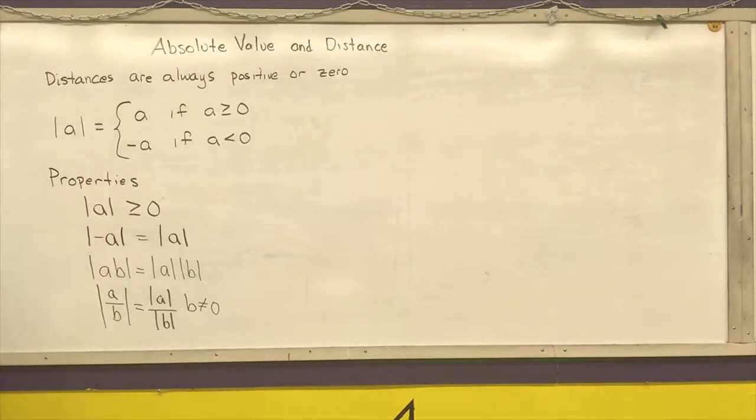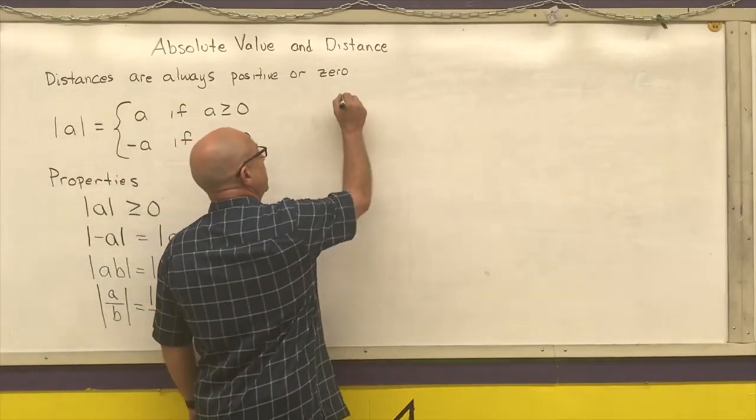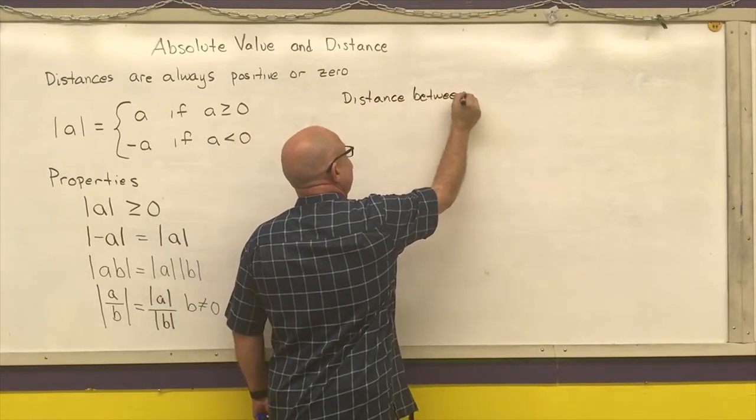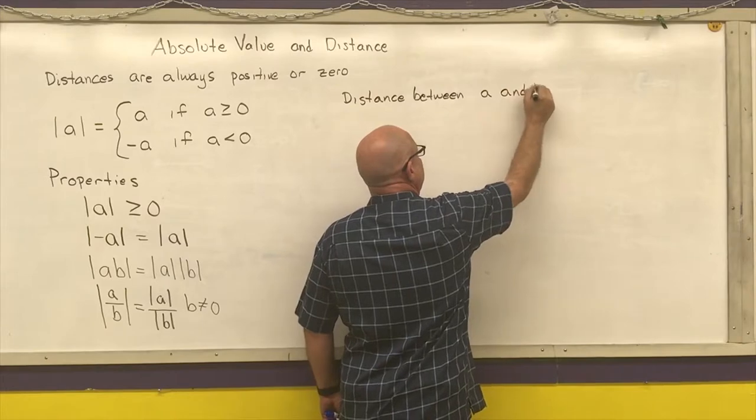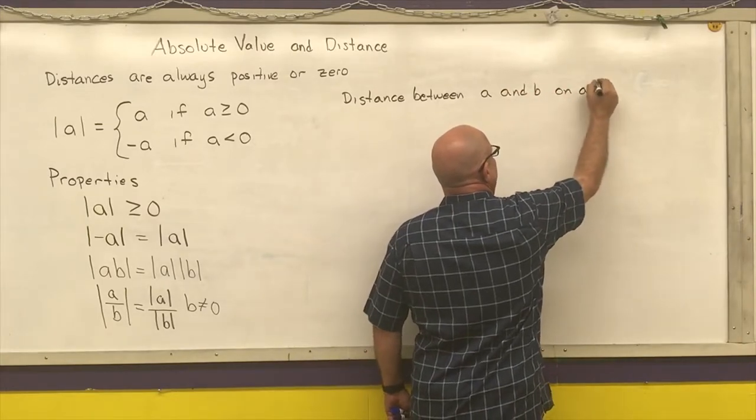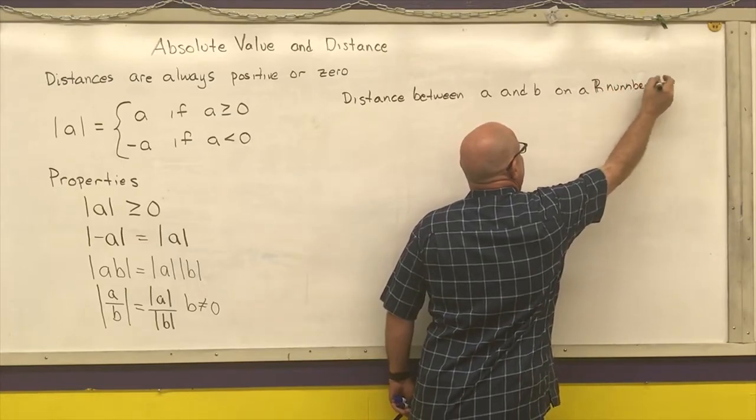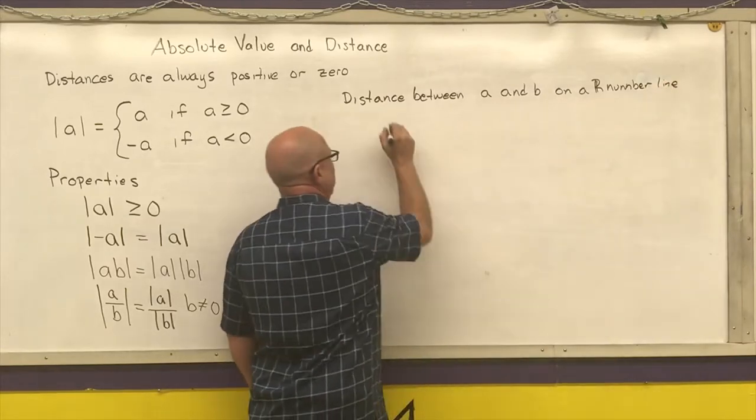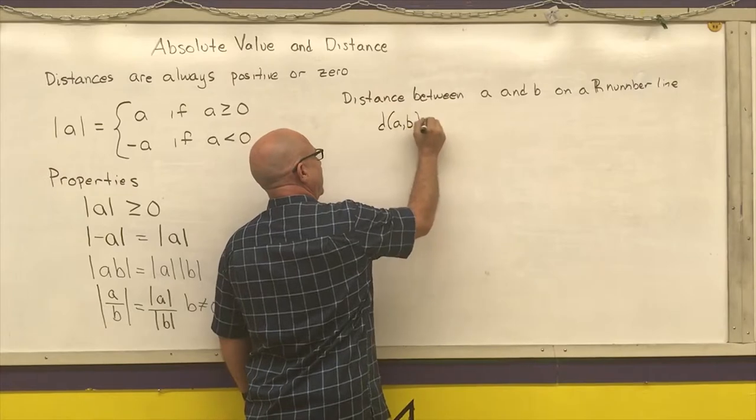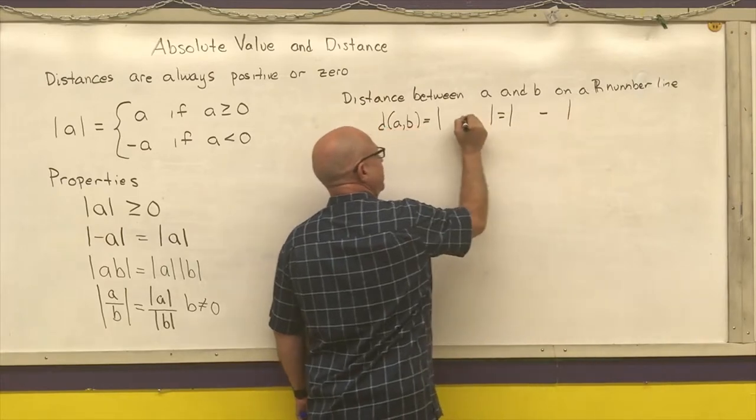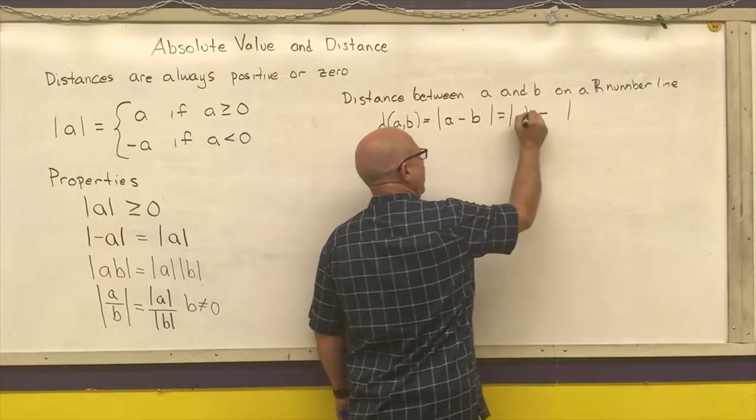You can use these properties to help you simplify things. Our actual definition of distance between A and B on a real number line: I'm going to put d(A,B). It's equal to the absolute value of the difference of the numbers on the two endpoints.